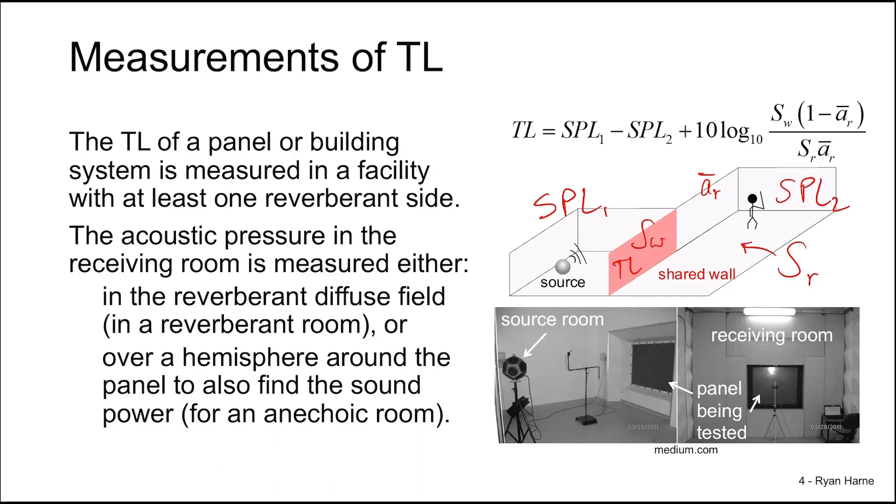This type of characteristic is shown in the bottom right photo. The source room on the left has a dodecahedron source that creates a diffuse sound field in the source room. The panel separating the rooms is well isolated and securely mounted, so that no leaking of sound occurs around the panel. In the receiving room, it's anechoic. One microphone is shown here that would move in a hemispherical shape around the panel surface.